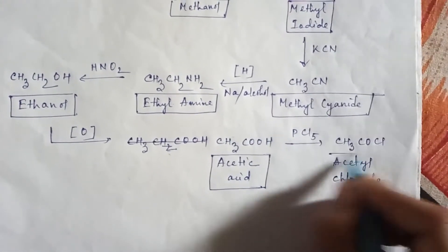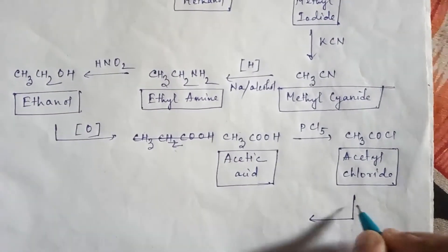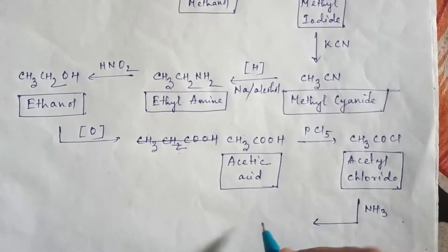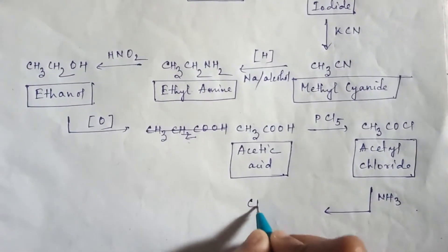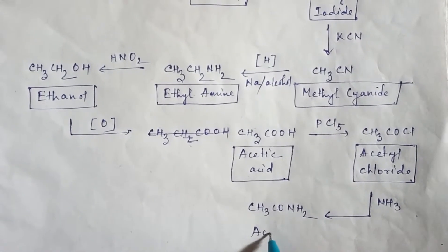Then if you use here ammonia, the acetyl chloride will convert into amide. So CH3CONH2, acetamide.